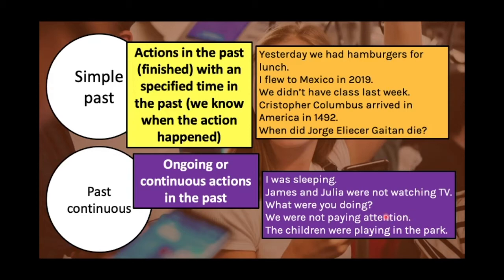'What were you doing?' — that's a question. Remember the structure of WH questions: 'What were you doing?' 'We were not paying attention' — a negative sentence. Remember that for continuous sentences we use the verb 'to be' in the past and the present participle — verb plus -ing. 'The children were not playing in the park.' These are examples of actions that are ongoing or continuous in the past.